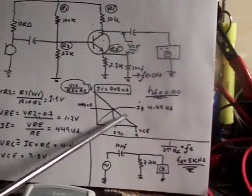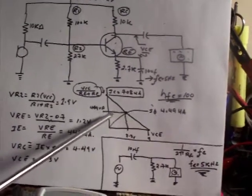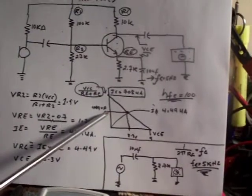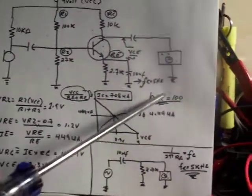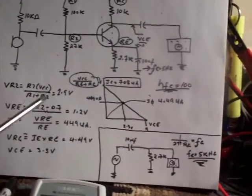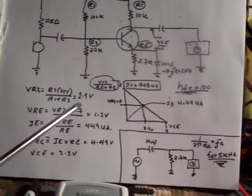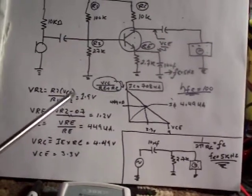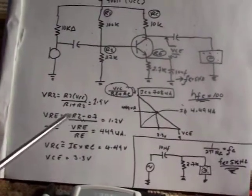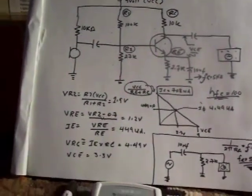VCE on our load line is at 3.3 volts. The quiescent current is 449 microamps. The HFE is assumed at about 100. I have not nailed it exactly. On the datasheet, the HFE can vary from 125 to 900, but on rough measurements here earlier, it was around 100.